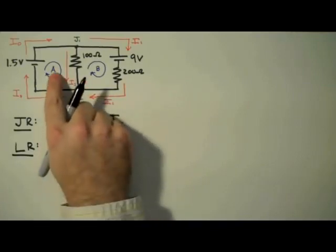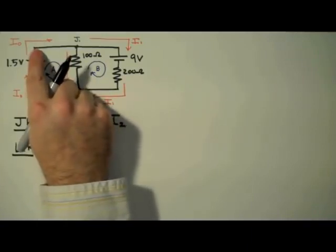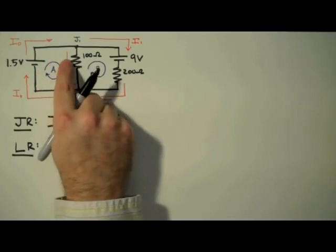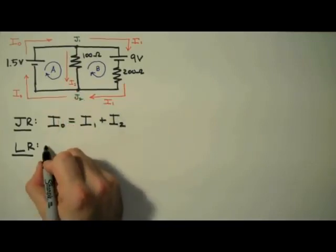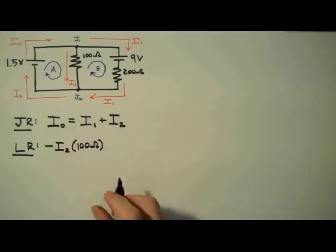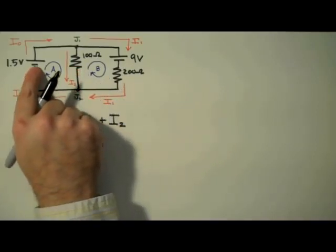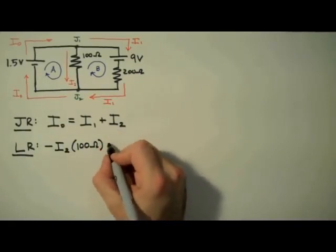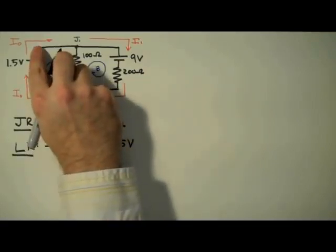Now we apply the loop rule to loop A, which states that the sum of the voltages around a closed loop is equal to 0. Starting in the upper left-hand corner, we're going to move clockwise around loop A. The first component we get to is the 100 ohm resistor. We're traveling clockwise, so we're coming down this leg, moving with the direction of the current. This means we're going to have a voltage drop across the resistor — negative IR — so I write negative I2 times 100 ohms. Continuing clockwise, we get to the 1.5 volt battery. Here we're moving from negative to positive, indicating a voltage lift, so I write plus 1.5 volts. That's the last component in this loop, so I set it equal to 0.